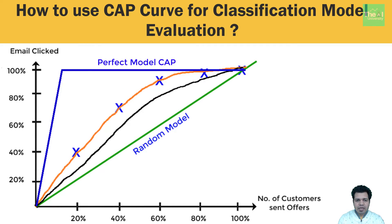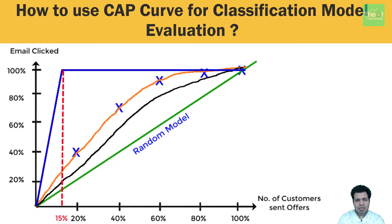Now we have another curve referred to as the perfect model CAP. This line represents a model which is perfect and can accurately identify the customers who are going to click on the email offer. If you drop a vertical line from the point where this perfect CAP line bends down to the horizontal x-axis, you will see it drops at 15% on the x-axis. This means customers up to 15% may or may not click, but customers beyond the 15% mark, if sent an email offer, will definitely click — because the perfect CAP curve reaches 100%, suggesting every customer who is sent an offer will click. When sent to 100,000 possible customers, you get a perfect positive response.